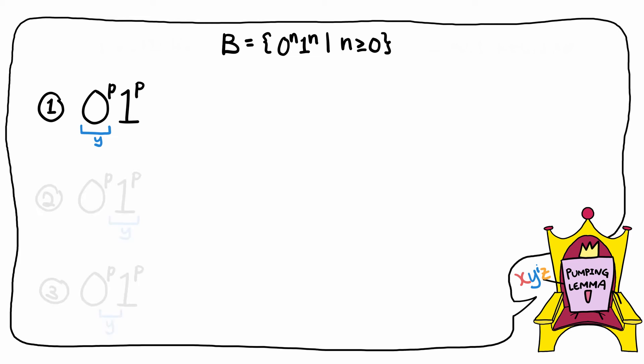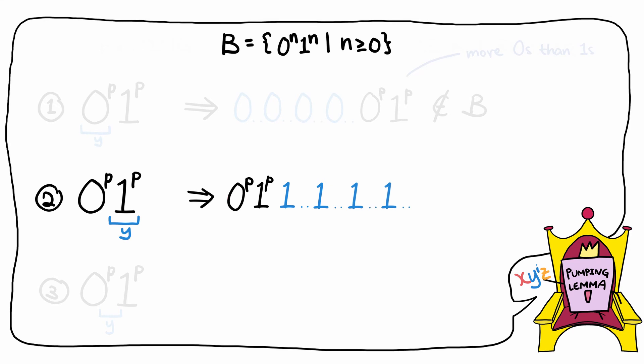If the pumping string consisted of all 0s, then we will end up with a string that has more 0s than 1s, which doesn't belong in the language. Similarly, if the pumping string consisted of all 1s, then we will end up with a string that has more 1s than 0s, which also does not belong in the language.